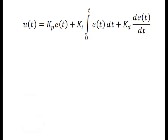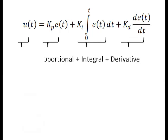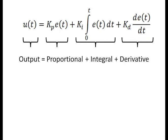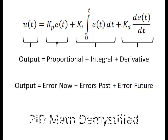So now we've looked at each of the components. I hope that the equation is a little less intimidating. The output is the sum of the proportional, integral, and derivative components — the combination of the error the controller is seeing right now, plus what it has accumulated in the past, and what it predicts for the future. I hope this helps demystify the math, at least a little.